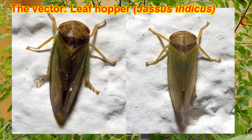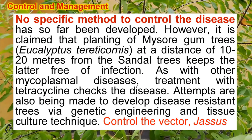The vector of this disease is the leaf hopper Jassus indicus, which spreads the disease. Coming to control and management, there is no specific method to control this disease. However, one example is that if the Mysore gum tree, Eucalyptus tereticornis, is grown about 10 to 20 metres away from the sandalwood tree, it can bring down the infection. Apart from this, the only method is sanitation — infected plants have to be removed, taken away, and destroyed.